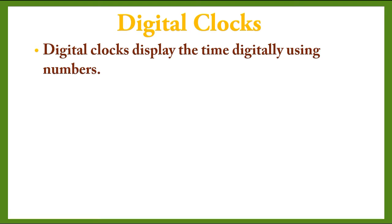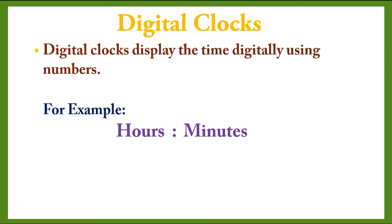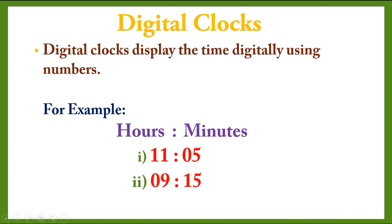For example, a digital clock shows the time using hours and minutes. The time is written digitally. What time is it right now? 11 hours and 5 minutes. Again, the time is written digitally. What time is it? 9 hours and 15 minutes.